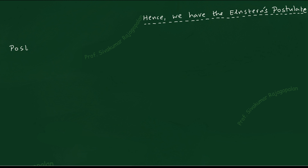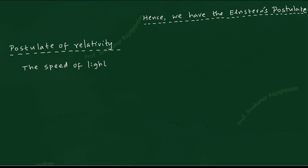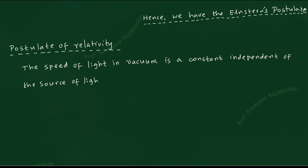Based on that physical thinking, we can now write down the postulate of relativity in a proper sentence. The postulate is: the speed of light in vacuum is a constant. You should not confuse this with the earlier principle of relativity. The speed of light in vacuum is a constant — not only is it a constant, but it is also independent of the source of light and independent of the observer. The speed of light will be a constant irrespective of everything.